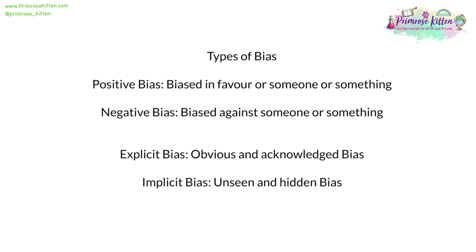There are many different types of bias, but these are ones which are particularly useful to the study of GCSE citizenship. Positive bias is when you're biased in favor of someone or something — that might be a politician, an idea, or an institution. Negative bias is when you're biased against someone or something. Explicit bias is obvious and acknowledged, and in some ways expected, such as political party broadcasts. Implicit bias is when that bias is hidden — it's not obvious and has to be hunted out. A really good example would be campaigns done by pressure groups which look factual but are implicitly biased.